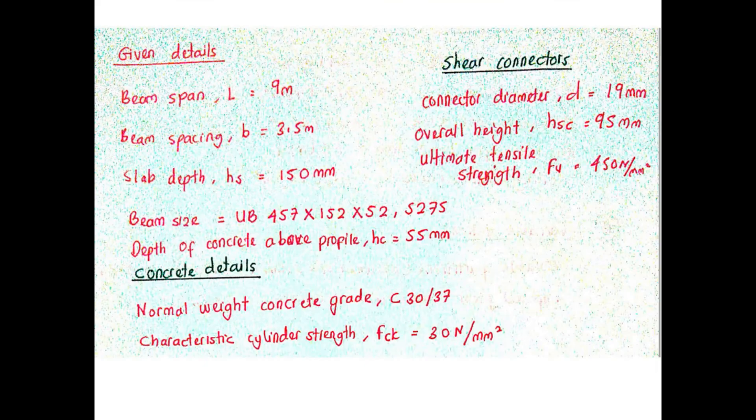Here are the details of the composite steel structures that we need to design. Beam span length is 9 meters. Beam spacing is 3.5 meters.